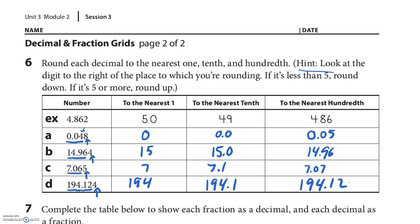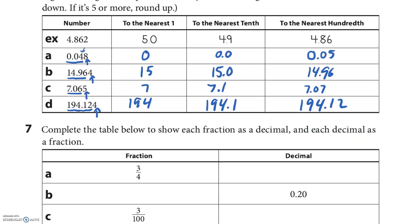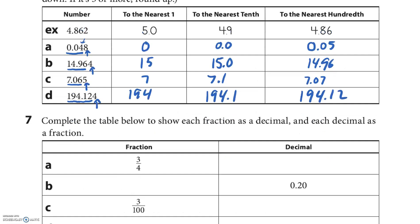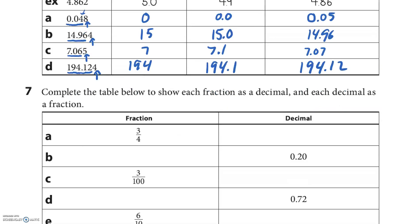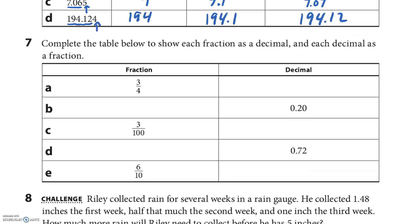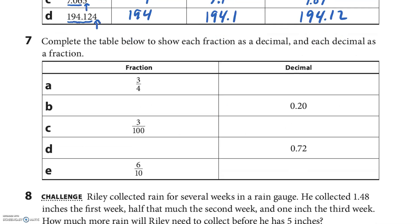Hopefully you paused that one — rounding is kind of tricky with that table. You always go back to the original number. Next: complete the table to show each fraction as a decimal and each decimal as a fraction.